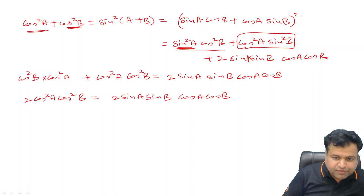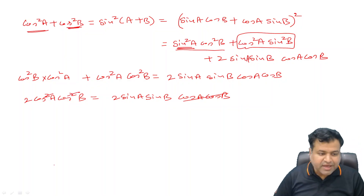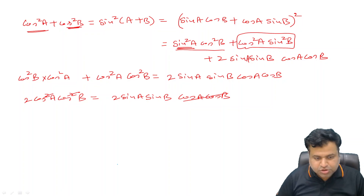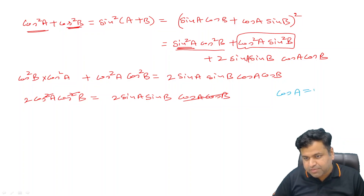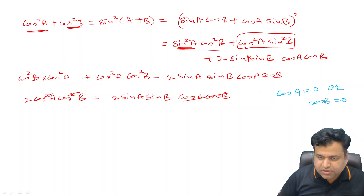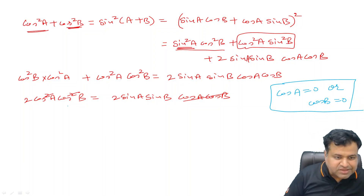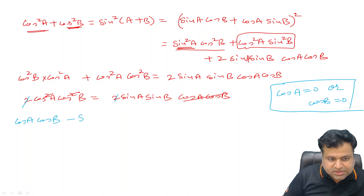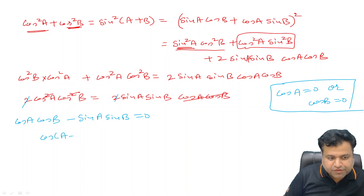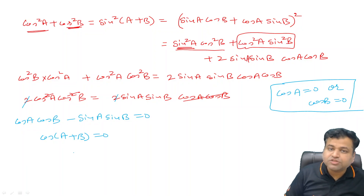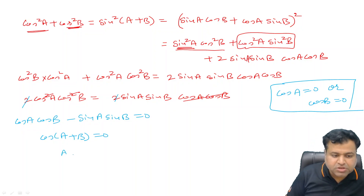We wish to cancel cos A cos B from both sides. We can cancel, but it can also be zero, so one solution is cos A = 0 or cos B = 0. Cancelling and dividing by 2, we are left with cos A cos B - sin A sin B = 0, which is nothing but cos(A + B) = 0. Since A, B, C are angles of a triangle, A + B is between 0 and π, which implies A + B = 90°.